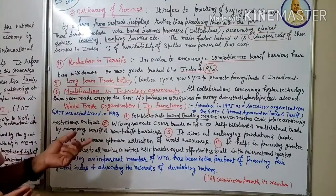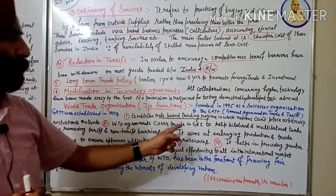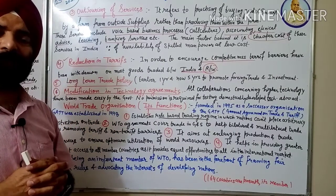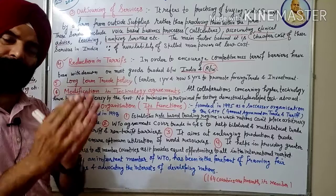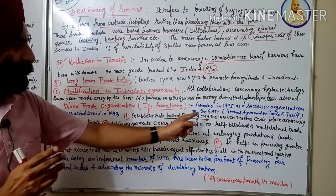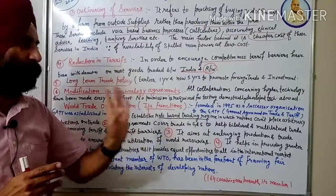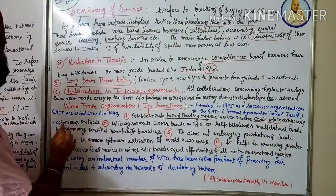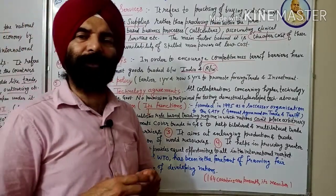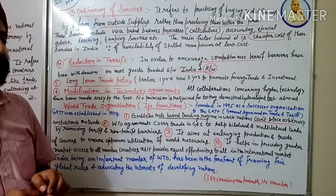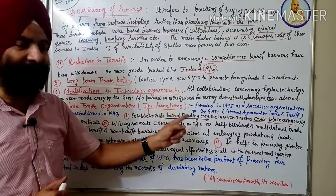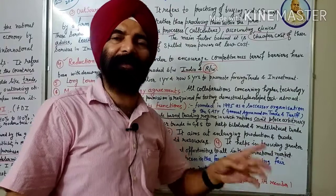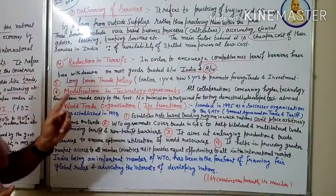Now what are the functions? Number one: Establishes a rule-based trading regime. Rule-based means no one can do as they please. Whatever trade happens between countries, some set rules have been made for it. That regime, that system, all countries will follow, in which nations cannot place arbitrary restrictions on trade as per their wish. If they want, they put restrictions; if they want, they remove them - this will not work. This is the first function of World Trade Organization - to see that no nation can put or remove restrictions as per their wish. The set rules should be followed.